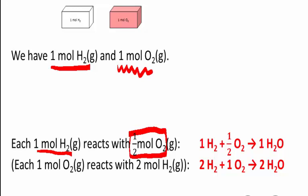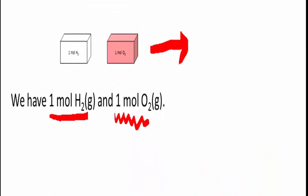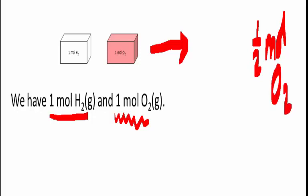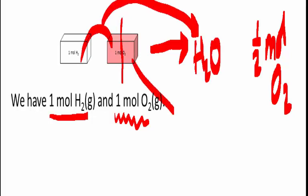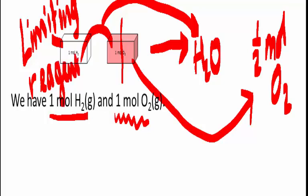So can you see which is the limiting reagent — which of these two will run out first? At the end of the reaction, we are still going to have half a mole of oxygen left over, unreacted, because only half a mole is needed to react with the hydrogen to produce water. The other half is extra — excess. So the one that gets used up first is hydrogen. Hydrogen is the limiting reagent here, because although it's all used up, oxygen is not all used up yet. There's still half a mole of it left.